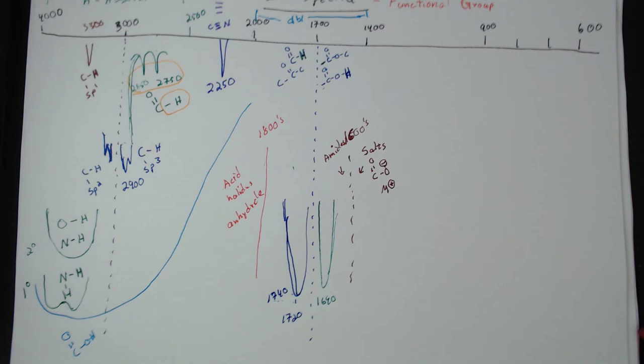If you have a ketone, ketones are really hard to identify by IR alone. Basically, you conclude you have a ketone by ruling everyone else out: no acid, no aldehyde. As for distinguishing esters, we haven't come to a way to identify them yet, but we're going to arrive there shortly.